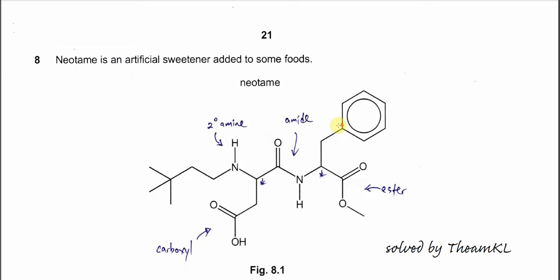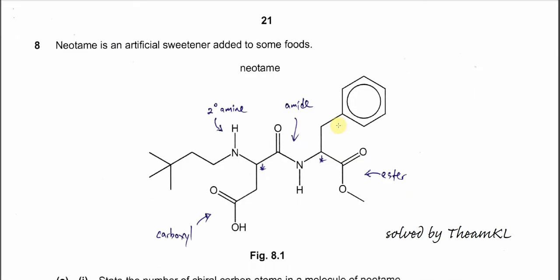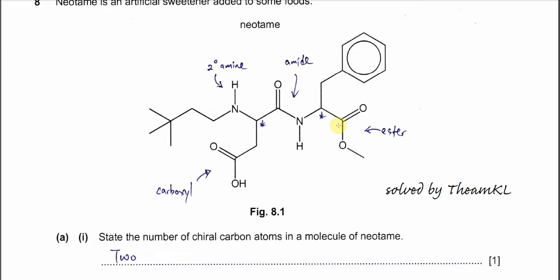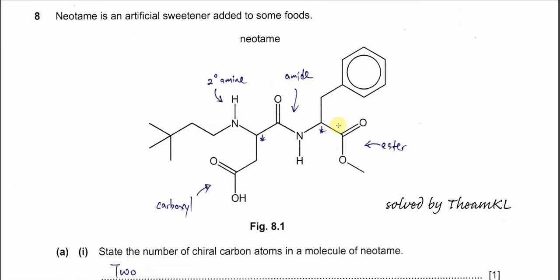Question 8. Neotame is an artificial sweetener added to some foods and figure 8.1 is its structure. First, state the number of chiral carbons in this molecule. Very easy.